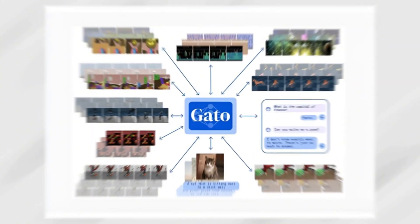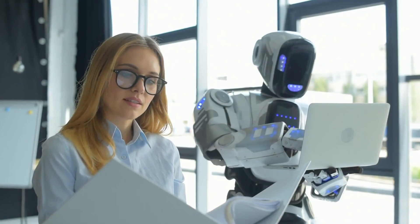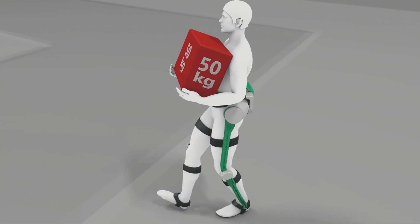For example, Gato, an AI system, learned by watching how both virtual and real robots act. And now it can do over 600 tasks, even ones it wasn't directly taught.